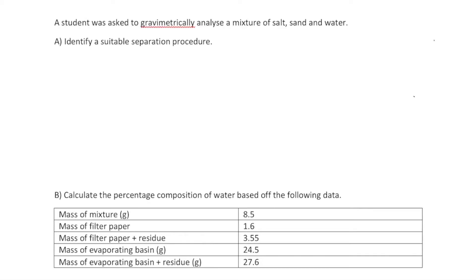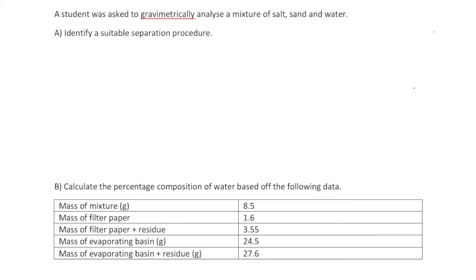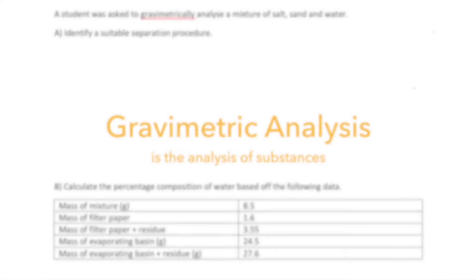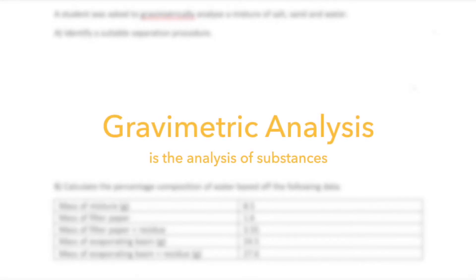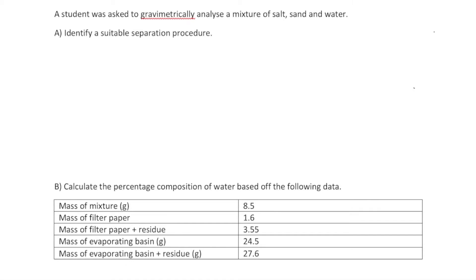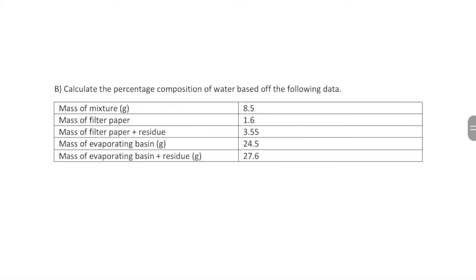Let's take a look at this question from the beginning of module one. A student was asked to gravimetrically analyze a mixture of salt, sand, and water. Gravimetric analysis is the analysis of substances by mass. There are two parts: the first asks you to identify a suitable separation procedure for this mixture, and the second asks you to calculate the percentage composition of water based on the following data.